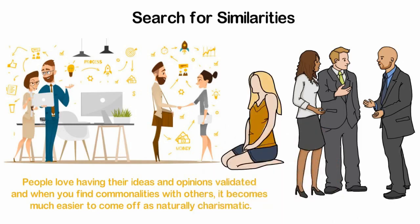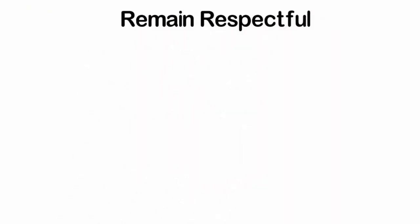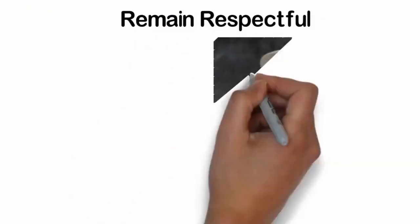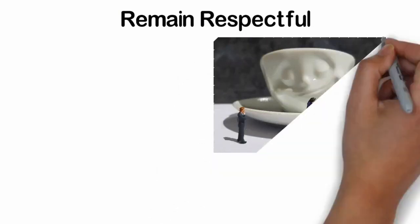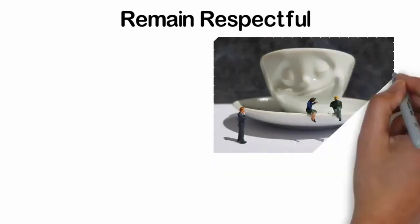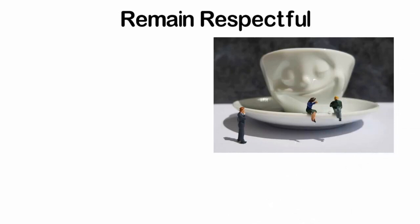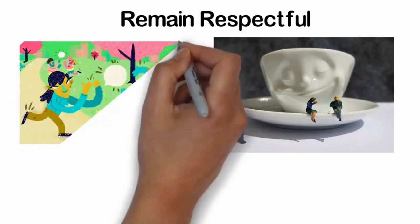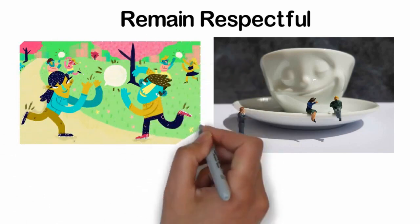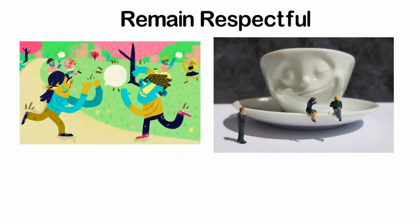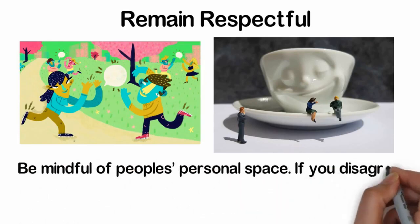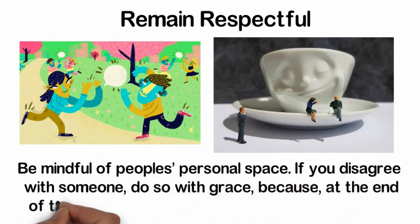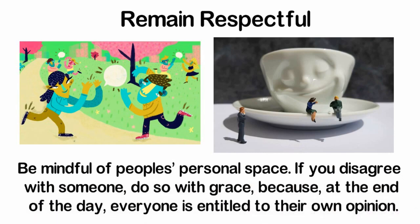Remain respectful. There's a thin line between being charming and being sleazy. Minding your p's and q's like your mother told you to makes all the difference in the world. When interacting with other people, it's important to remain polite. Compliment people and mean what you say. Don't talk about people behind their backs or gossip about them. Don't ask invasive questions or make offensive comments. Be mindful of people's personal space. If you disagree with someone, do so with grace because at the end of the day everyone is entitled to their own opinion.